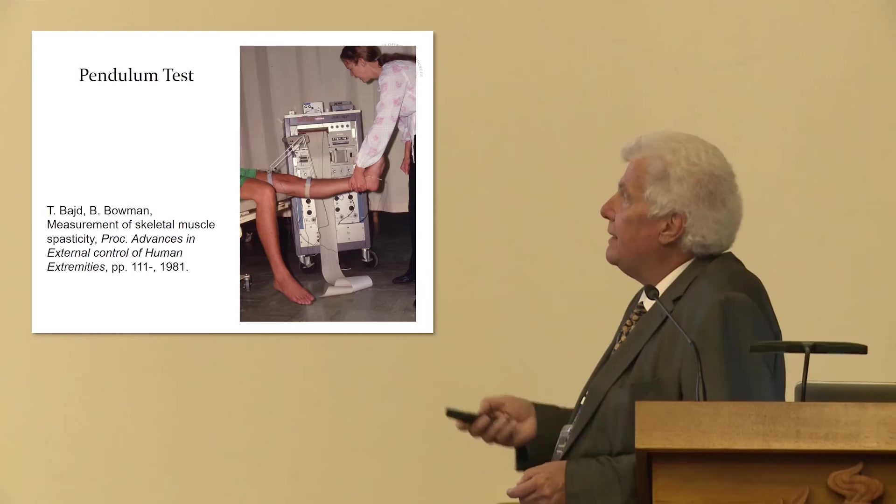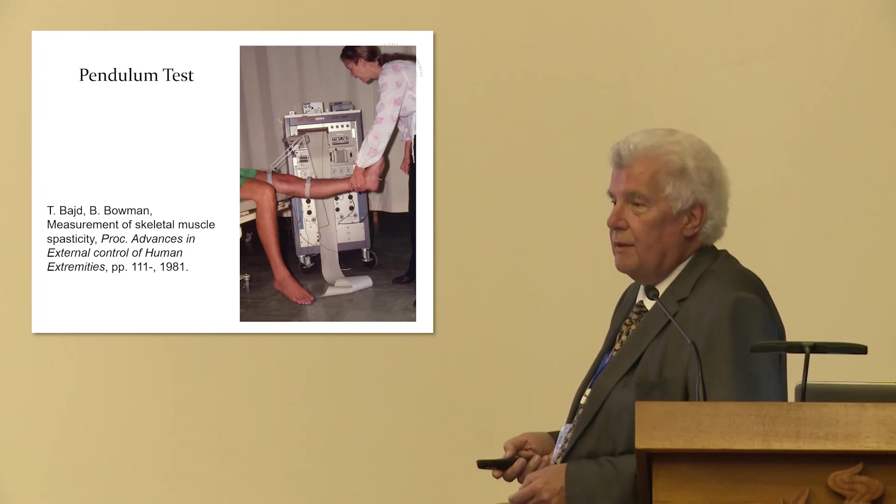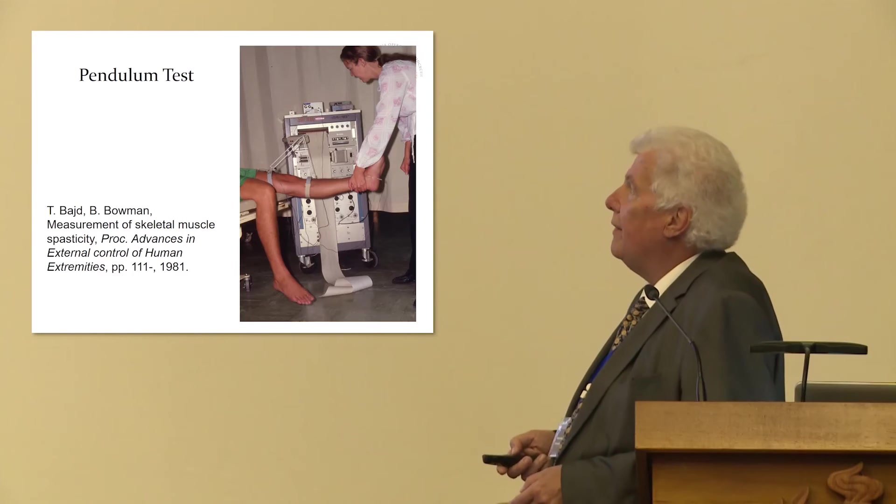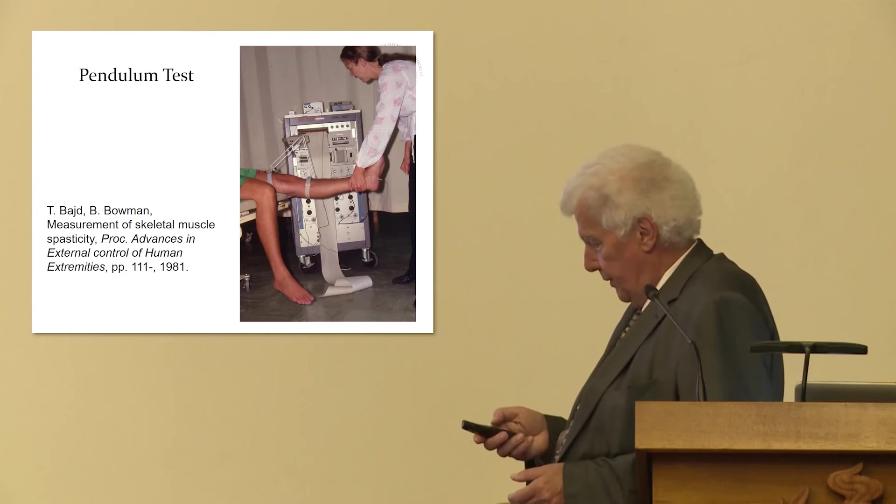So the subject is placed like this on a table. The therapist brings the leg to the horizontal position. Then the leg is swinging. And during this swinging, we are measuring the angle of the knee and also the EMG.